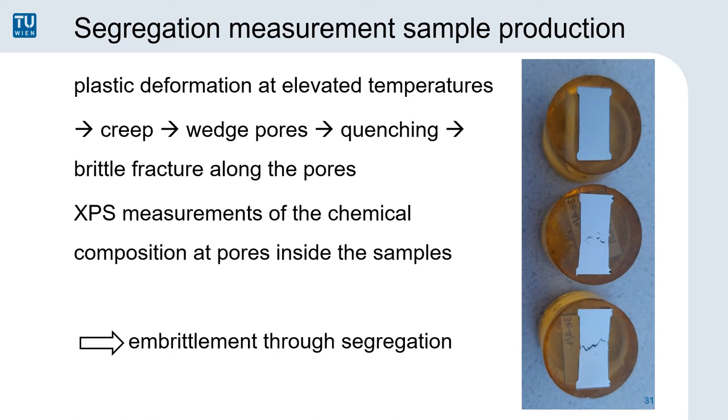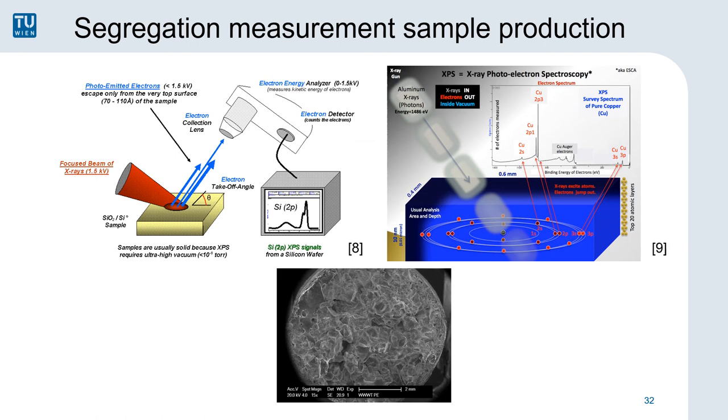The next topic, which is very interesting for me personally, is segregation measurements, which we use the Gleeble system to produce the necessary samples. When we deform the samples at elevated temperatures, we have a creeping regime where we form wedge pores. These pores are quenched in using a quenching apparatus and broken open using liquid nitrogen temperatures. Then we use XPS measurements to show the chemical composition at these pores inside the samples. The theory is that the elements that are segregating towards these pores can have the effect of embrittling right there. So we are hoping to find which elements are embrittling our samples specifically for the different compositions.